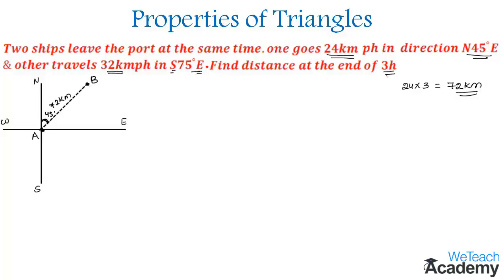Which is 96 kilometers. So the ship C travels 96 kilometers from the port making the angle 75 degrees, and then we have to find the distance between both the ships, that is the length BC at the end of three hours.